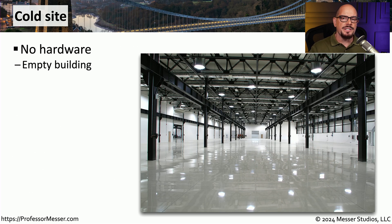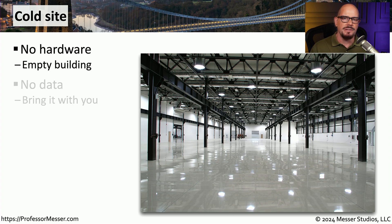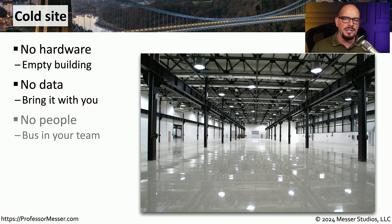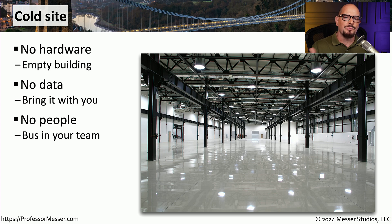If you're going to use a separate disaster recovery site, there are a number of different ways to set it up. One is with a cold site — effectively an empty building. None of our equipment is in this building and none of our data currently resides there. We need to grab backup tapes or equipment that has our data and move it to this location to perform disaster recovery. We also don't have any people at this location, so we may need to transport people there. This obviously means a lot of work if a disaster is called, but it also means this is a relatively inexpensive backup location.